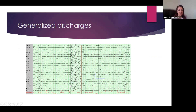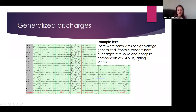This is an example of what a generalized discharge might look like. You can see these waveforms look very spiky — they're a lot taller than the surrounding EEG, hundreds of microvolts — and they're followed by these big slow waves. On an EEG report, this might be described as paroxysms of high-voltage generalized frontally predominant discharges, because we see them most expressed in the frontal regions of the brain. We describe what they look like — spikes and poly-spikes, meaning multiple little spikes before the wave. We also describe the frequency, usually 3 to 4.5 Hz.